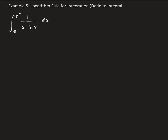So if we try to let u be the denominator, which is x times natural log x, it's definitely not going to work in this case, because taking the derivative gives us x times 1 over x plus natural log x times 1, which equals 1 plus natural log x. We don't have 1 plus natural log x in this function, so this u substitution won't work.